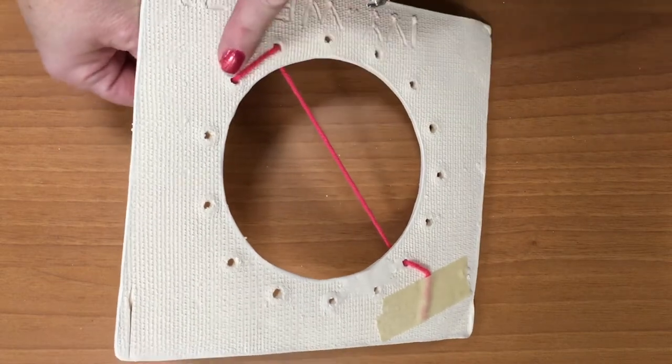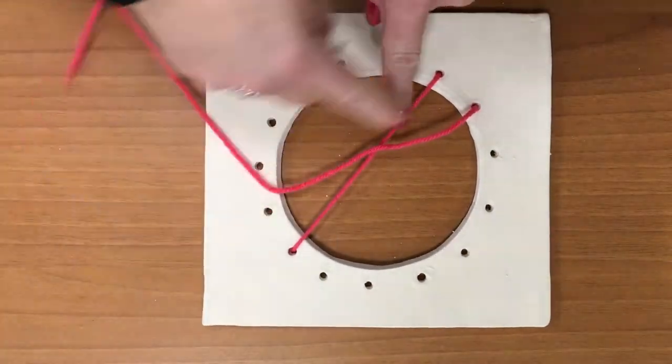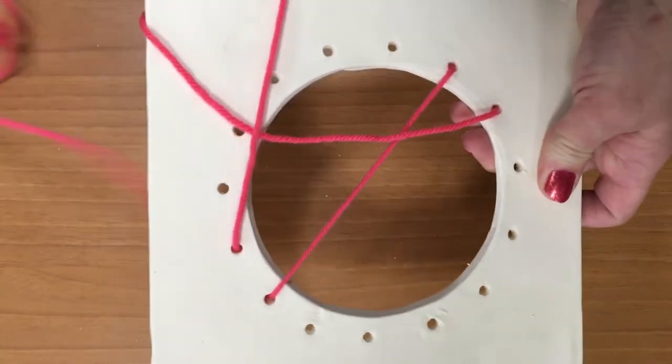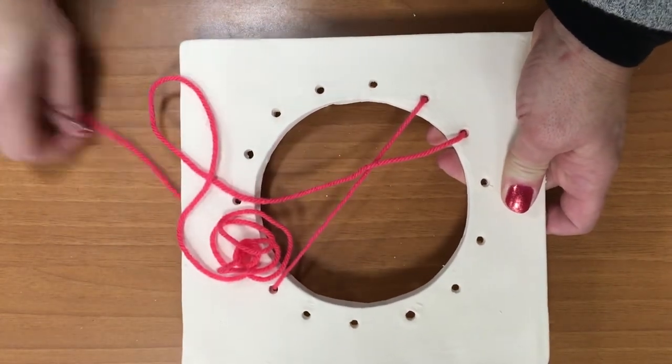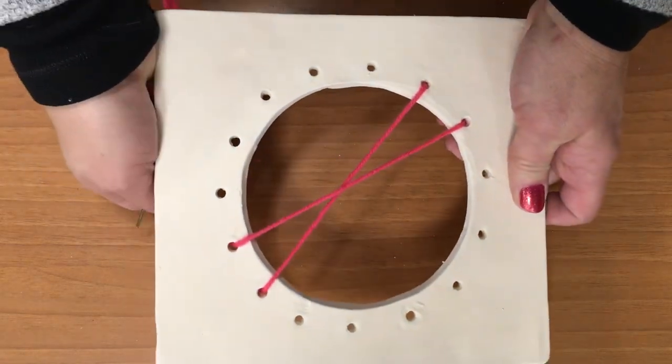So you see that is back through. And now we're going to make an X. Cross over the string that you put in, the yarn rather. So now we have the X.